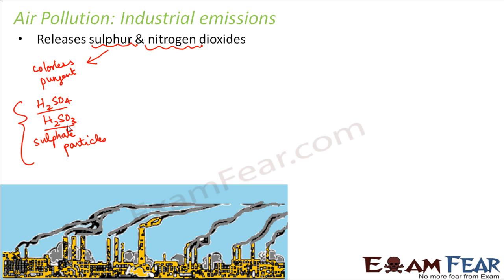These acids remain stuck in the clouds, and when those clouds precipitate or fall on the surface as rain, the rain contains these acids — and that's how the rain becomes acid rain. Acid rain is extremely harmful, and we will discuss it in the next slide. So sulfur dioxide ultimately results in acid rain — that is one major disadvantage.